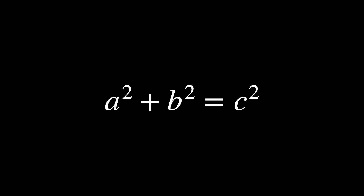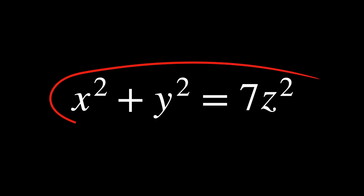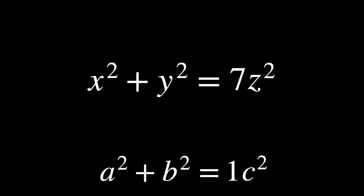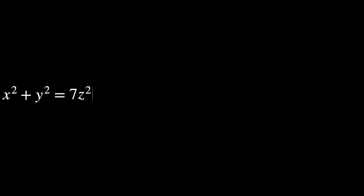Now let's change that equation a little bit and insert a 7 in there. We'll replace a, b and c with x, y and z. What we'll do with just this simple equation will demonstrate the essential ideas we need of arithmetic geometry. The only difference between this equation and the Pythagorean equation is that the coefficient 1 was replaced with 7. We want to show that x squared plus y squared equals 7z squared has no solution in non-zero rational numbers x, y and z.